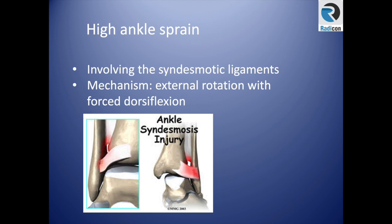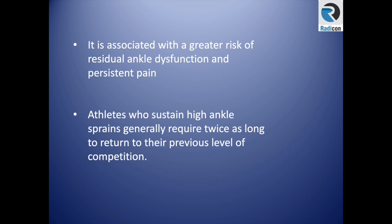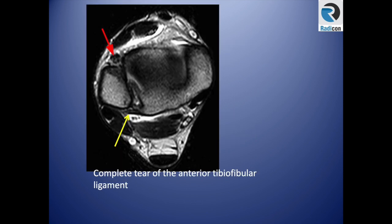The syndesmotic ligament is very important to recognize because it is associated with a greater risk of residual ankle dysfunction and takes longer to return to the field for athletes. On axial imaging at the level of the D-shaped fibula, you are at the syndesmotic level. Here there is complete disruption of the anterior tibiofibular ligament with a globular appearance of the retracted residual ligaments, indicating syndesmotic injury, while the posterior tibiofibular ligament is intact.